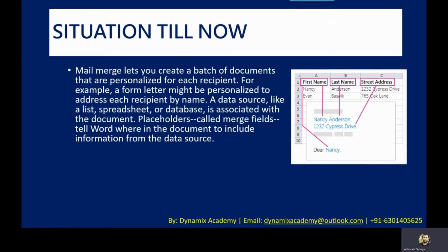Let us now see what was Mail Merge. Mail Merge lets you create a batch of documents that are personalized for each recipient. For example, a form letter might be personalized to address each recipient by name. A data source like a list, spreadsheet, or database is associated with the document. Placeholders called Merge Fields tell Word where in the document to include the information from the data source.